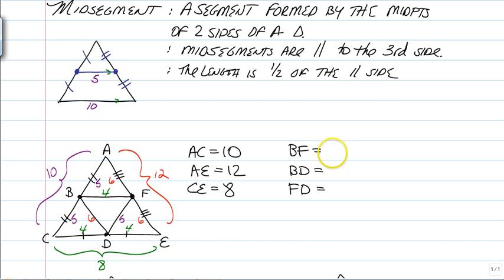So, that means, after you've found everything, BF is going to be 4, BD is 6, and FD is 5. And that's it. You're done with that one.